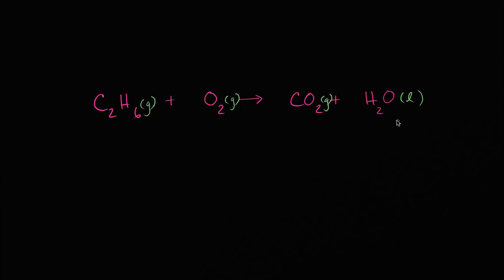Like we've seen in previous examples, this chemical equation is not balanced. How can we tell? On the left-hand side we have two carbons; on the right-hand side we have one carbon. On the left-hand side we have six hydrogens; on the right-hand side we only have two. On the left-hand side we have two oxygens; on the right-hand side we have two plus three oxygens. So none of the elements are balanced.